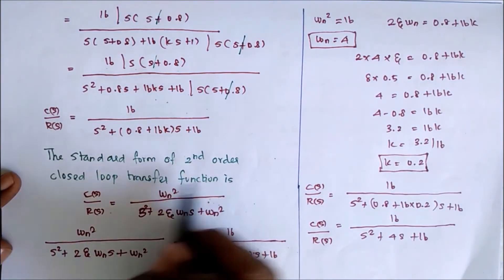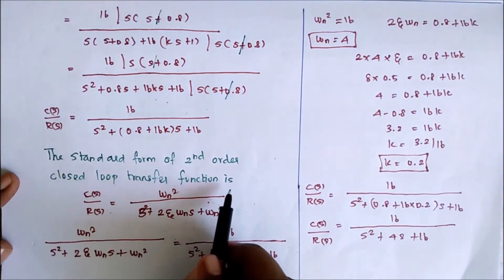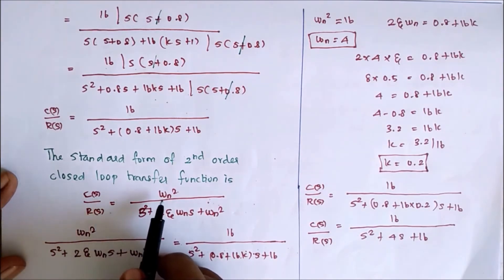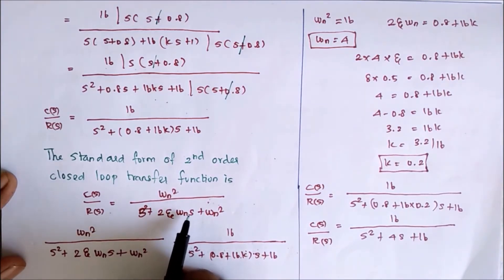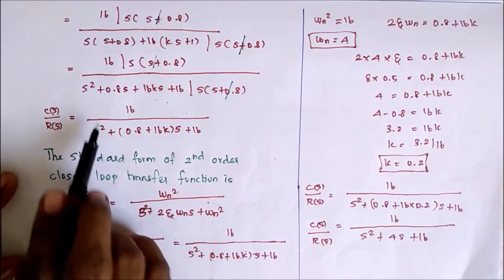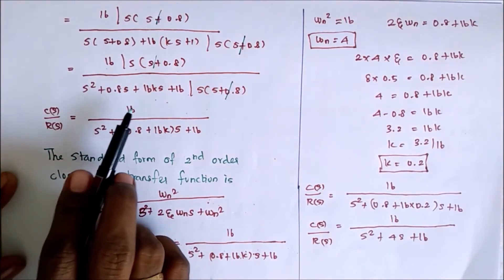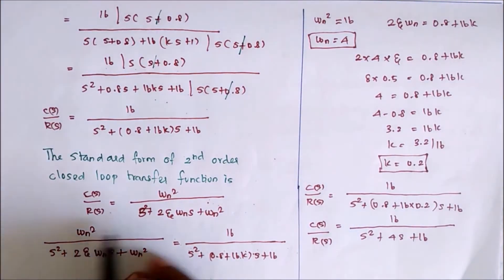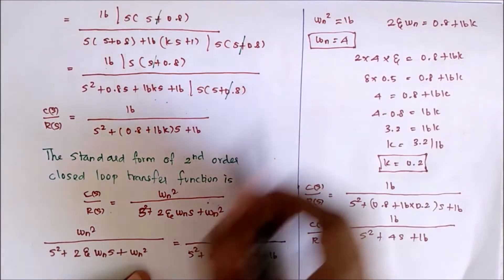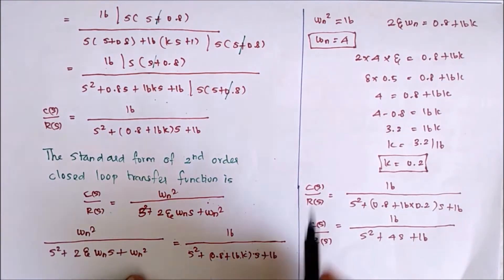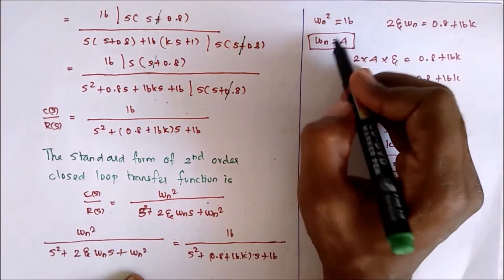The standard form of the second order closed loop transfer function is C(S) divided by R(S) equal to ωn squared divided by S squared plus 2ζωn·S plus ωn squared. This is the standard form. This is the given transfer function. We have to compare and equate these two. Therefore, from this, ωn squared equals 16, so ωn equals 4.